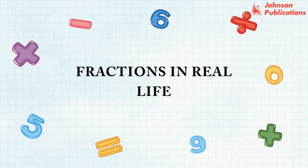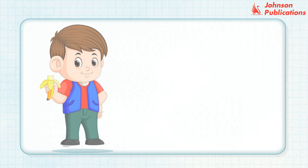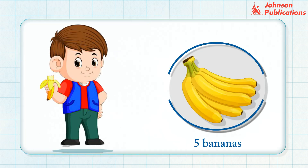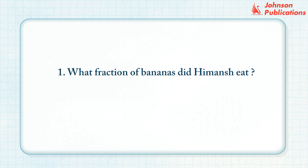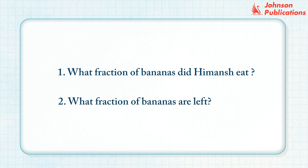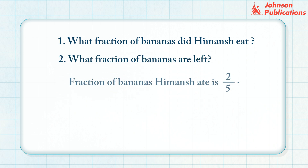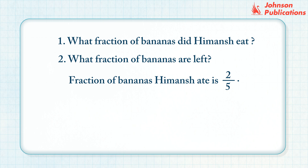Fractions in real life. Himanch had five bananas and he ate two bananas. What fraction of bananas did he eat, and what fraction of bananas are left? The fraction of bananas Himanch ate is two fifths. If he eats two bananas, he is left with five minus two, which equals three bananas. The fraction of bananas left is three by five.